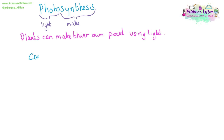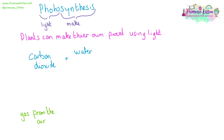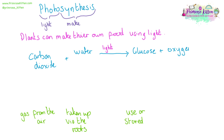The equation for this is: carbon dioxide, which is a gas that comes from the air, plus water, which is taken up by the roots, turns into — using light, and please notice that light is above the arrow, not on either side — glucose, which is used or stored, and oxygen gas, which is released back.